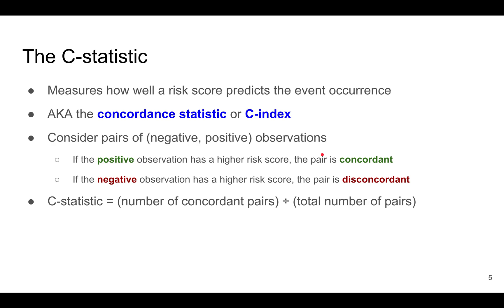I'm going to introduce another metric called the C statistic. And basically, it measures how well a risk score or a logistic regression model or other binary classification model predicts the event occurrence. C here stands for concordance. So it's also called the concordance statistic, or sometimes called the C index.